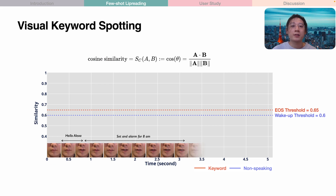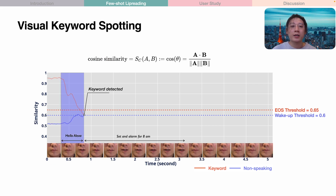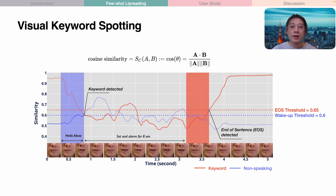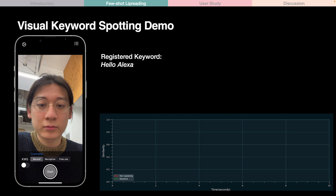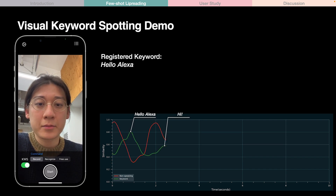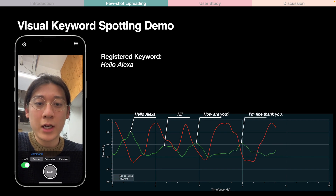We also leveraged the lip embeddings to enable visual keyword spotting for hands-free activation. By enrolling two special commands — a keyword (for example, 'Hello Alexa') and non-speaking lips — we use a sliding window to continuously detect when the user starts and ends saying a command by computing the cosine similarity between the real-time input and the keyword samples. In this way, the user can activate the system hands-free by saying the keyword. The model can efficiently detect the keyword and reject negative samples.